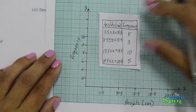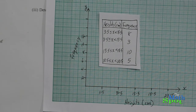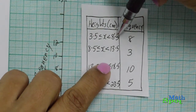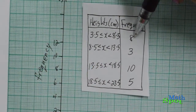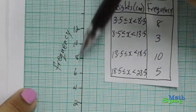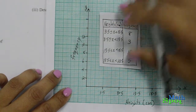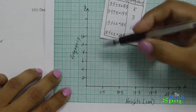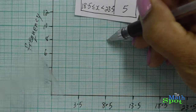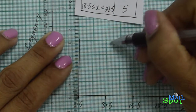Now that we have that ready, we are ready to draw our bars on the histogram. For the first bar, 3.5 to 8.5, that one has a frequency of 8. Locate 8 on your y-axis. We have located 8, so we know how high that first bar is going to be. Using your ruler and pencil, draw that bar.